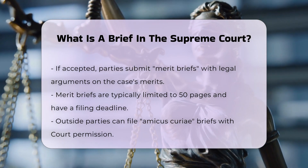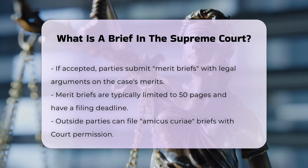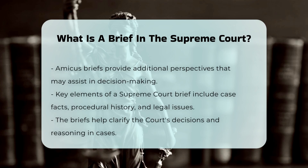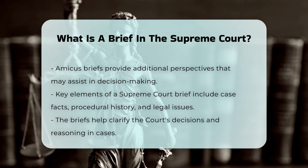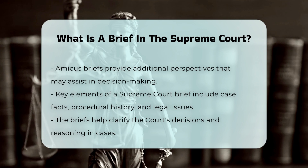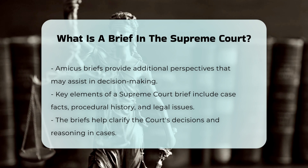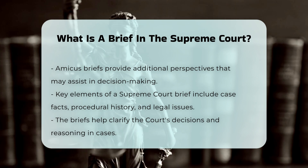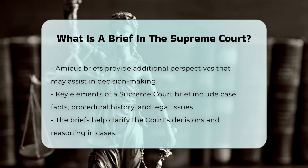The structure of a brief in the Supreme Court includes several key elements: the statement of the case facts, the procedural history, the issues in question, the holding, the court's decision, the court's rationale for each holding, and any separate opinions, such as concurring or dissenting opinions. These briefs are essential for understanding the legal arguments and reasoning behind the court's decisions, and they play a significant role in the appellate process.